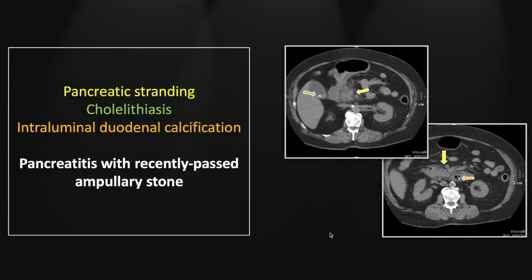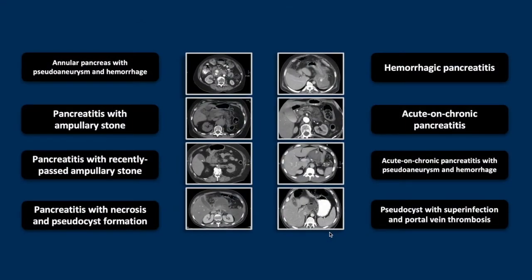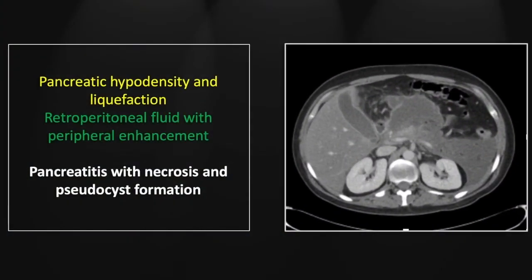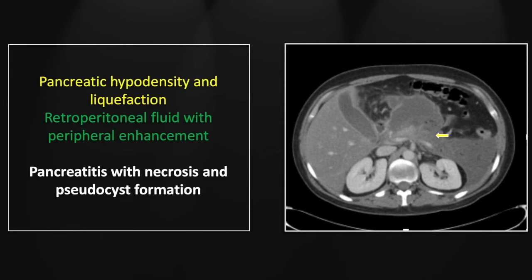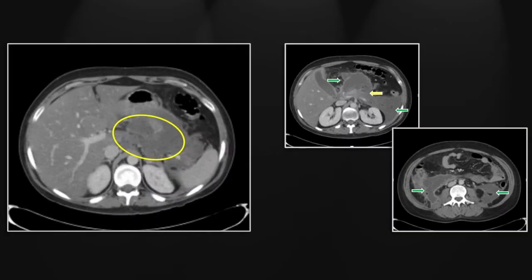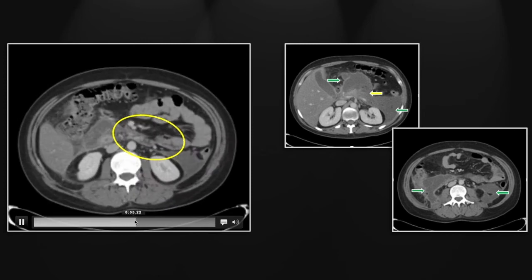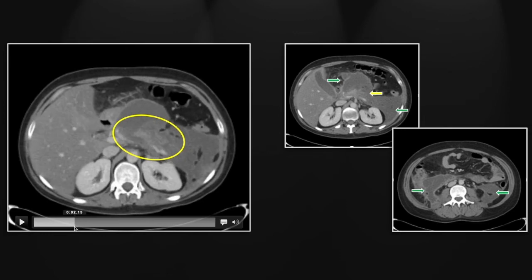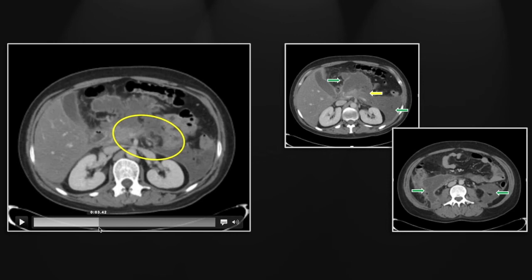So that was a case of pancreatitis due to a recently passed ampullary stone. Our next case is pancreatitis with necrosis and extensive pseudocyst formation. There is essentially no enhancing pancreatic parenchyma remaining, certainly not in the tail and very little in the body. There is also extensive peripancreatic and retroperitoneal — specifically anterior perirenal space — fluid. Note also on the right side that anterior perirenal space fluid shows significant peripheral enhancement, suspicious for inflammation or infection. Essentially half the body and most of the tail are necrotic and unperfused.